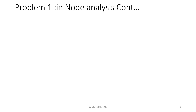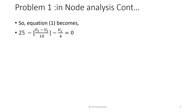Substitute the values of the currents I1, I2, I3, and I4 in equations 1 and 2. Then consider equation 1. The value of equation 1 becomes 25 minus V1 minus V2 by 10, minus V1 by 4, that is equal to 0. If we simplify this equation, we obtain 0.35V1 minus 0.1V2 is equal to 0. Consider this as equation 3.